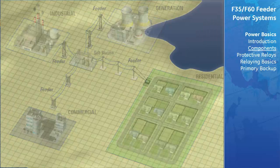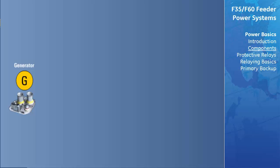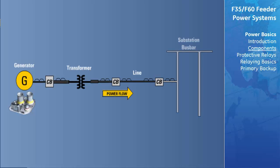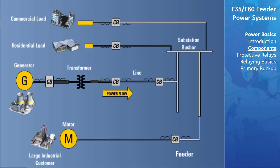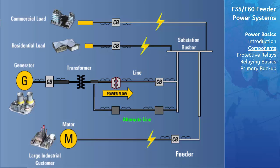The power system can be thought of as a chain, the links of which are the generators, the power transformers, the switchgear, the transmission lines, the distribution circuits, and the loads. The failure of any link destroys the capacity of the chain to do the work for which it was intended. One way in which continuity can be preserved is to provide alternate links.